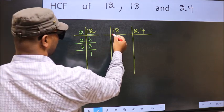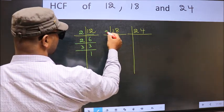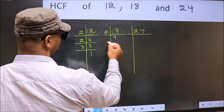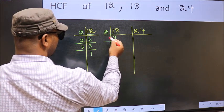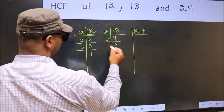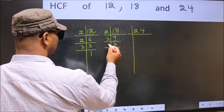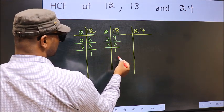Now the other number 18. 18 is 2 times 9 is 18. Now we have 9. 9 is 3 times 3 is 9. Now we have 3. 3 is a prime number so 3 times 1 is 3.